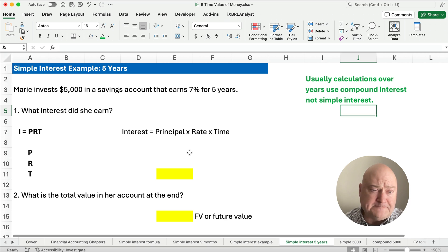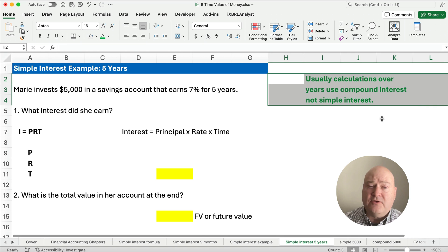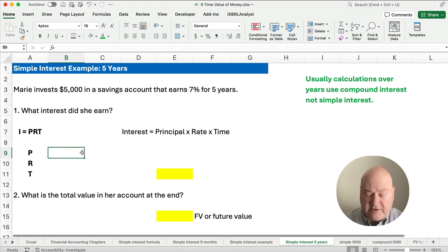Now let's do Marie invests 5,000 and her savings account earns 7% for five years. Let me give you a little warning here. Usually anytime we use multiple years, then we're going to use compound interest, but we're only working on simple interest right now. Generally we would calculate compound interest rather than simple interest, but we can calculate this certainly with simple interest. Compound interest is going to be a better concept for us, but to understand compound interest, let's start with simple interest. $5,000 is our principal, 7% or .07, and five years is going to be the time period.